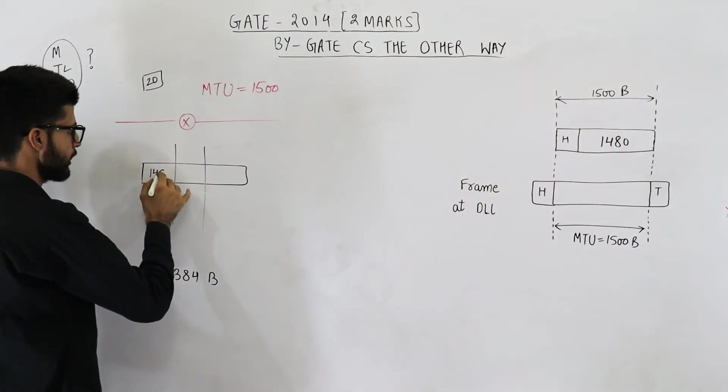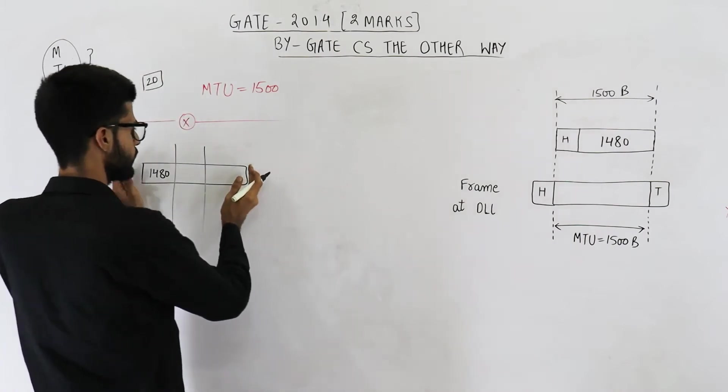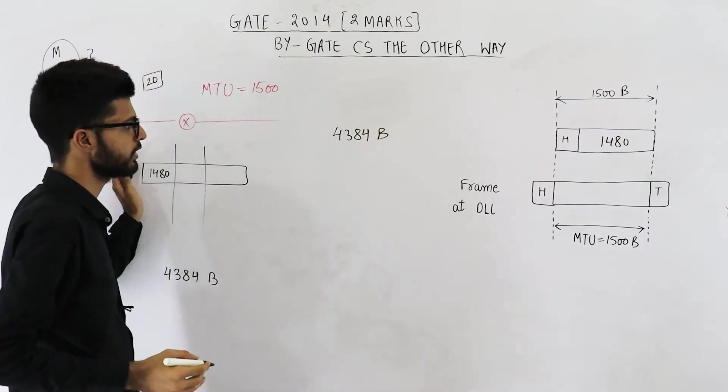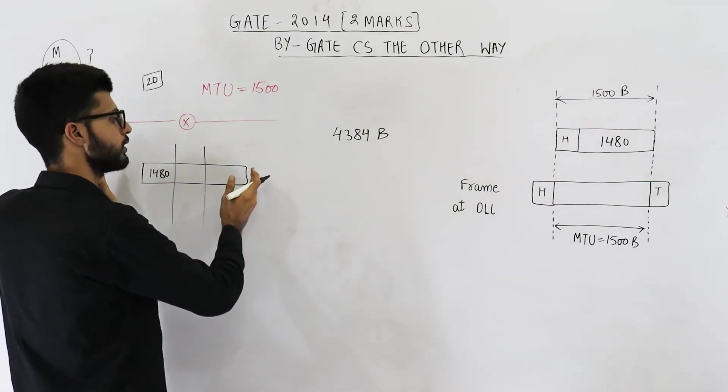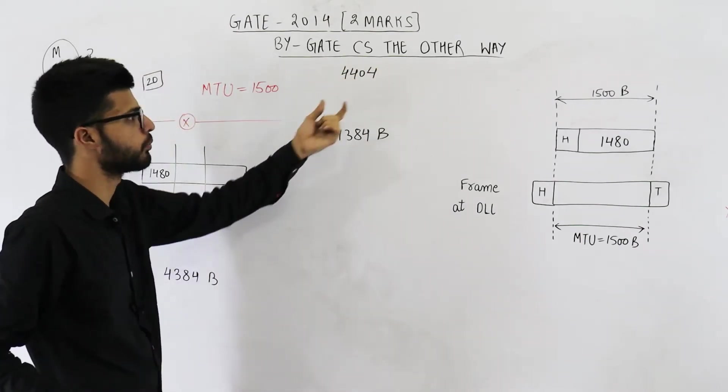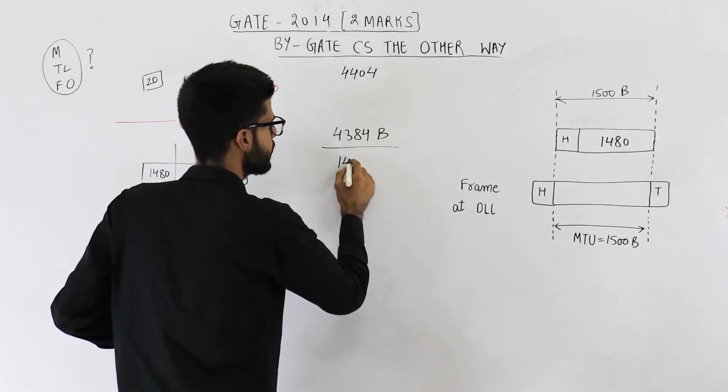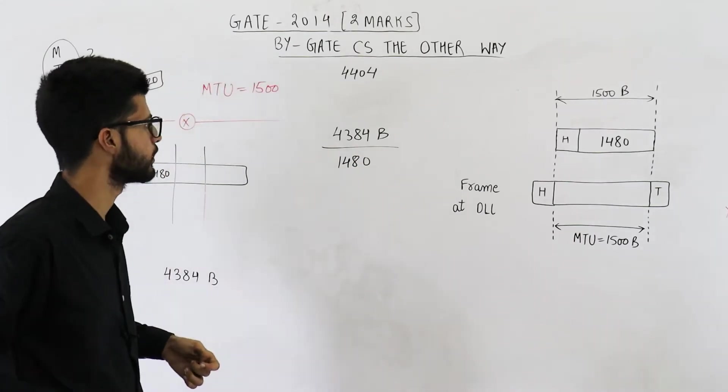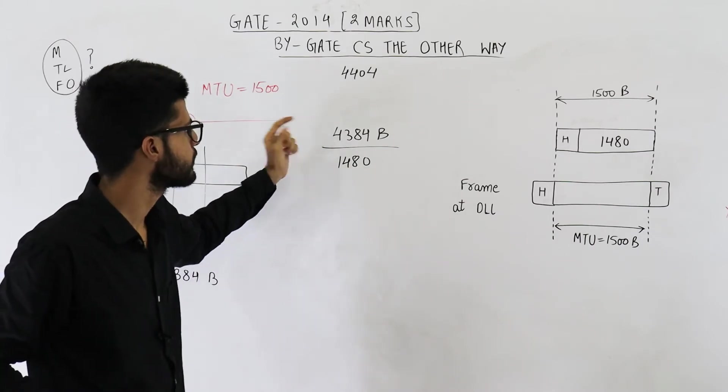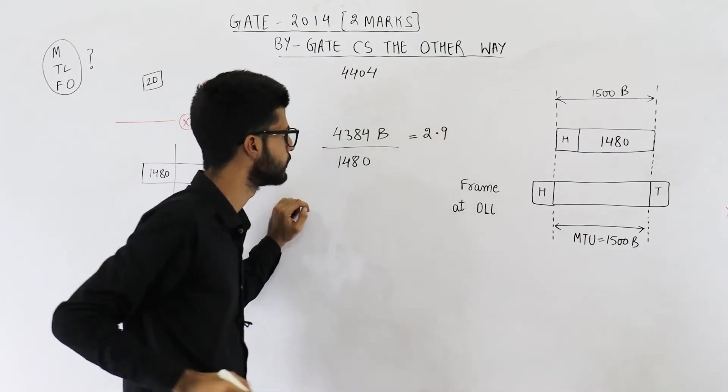So the size of first fragment will be 1480. Let us see how many total fragments are going to be created. So the total amount of data is 4384 bytes. We have seen that the total size of this datagram was 4404, and if you remove 20 byte header you will be left with this much data. Now it has to be fragmented into fragments of size 1480. If you divide it you are going to get something 1480 into 2 is 2960. So you are going to get 2 point something. It will be 2.9 maybe. Yeah it's 2.9.